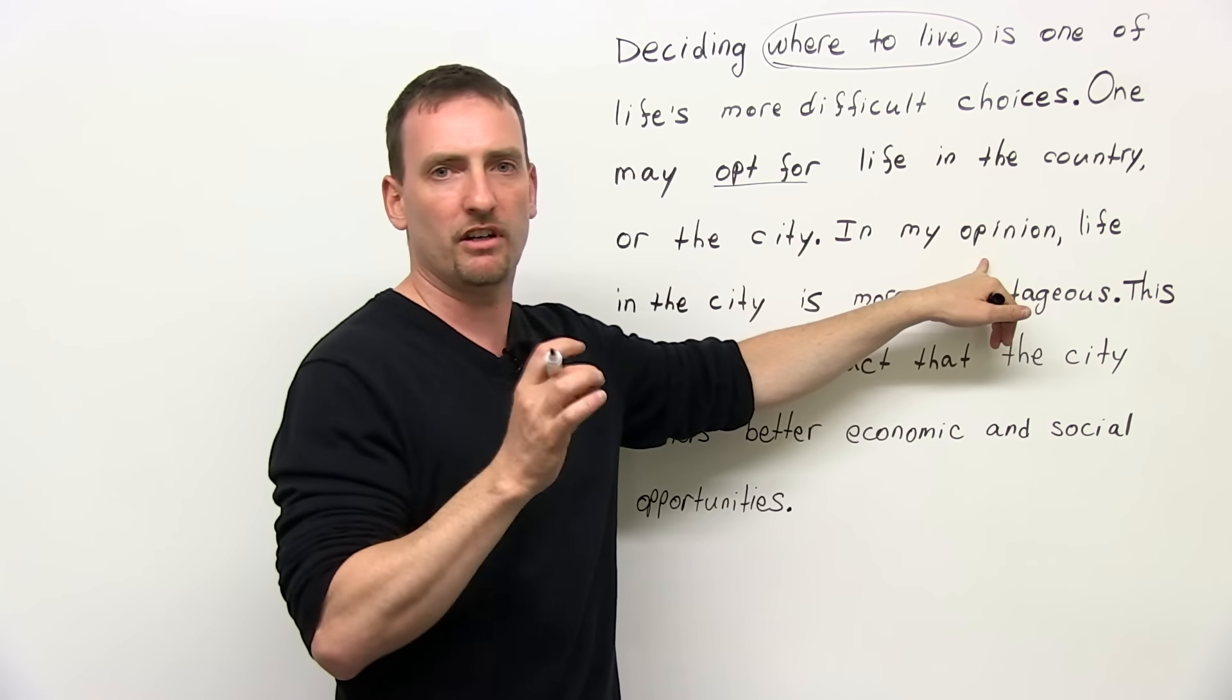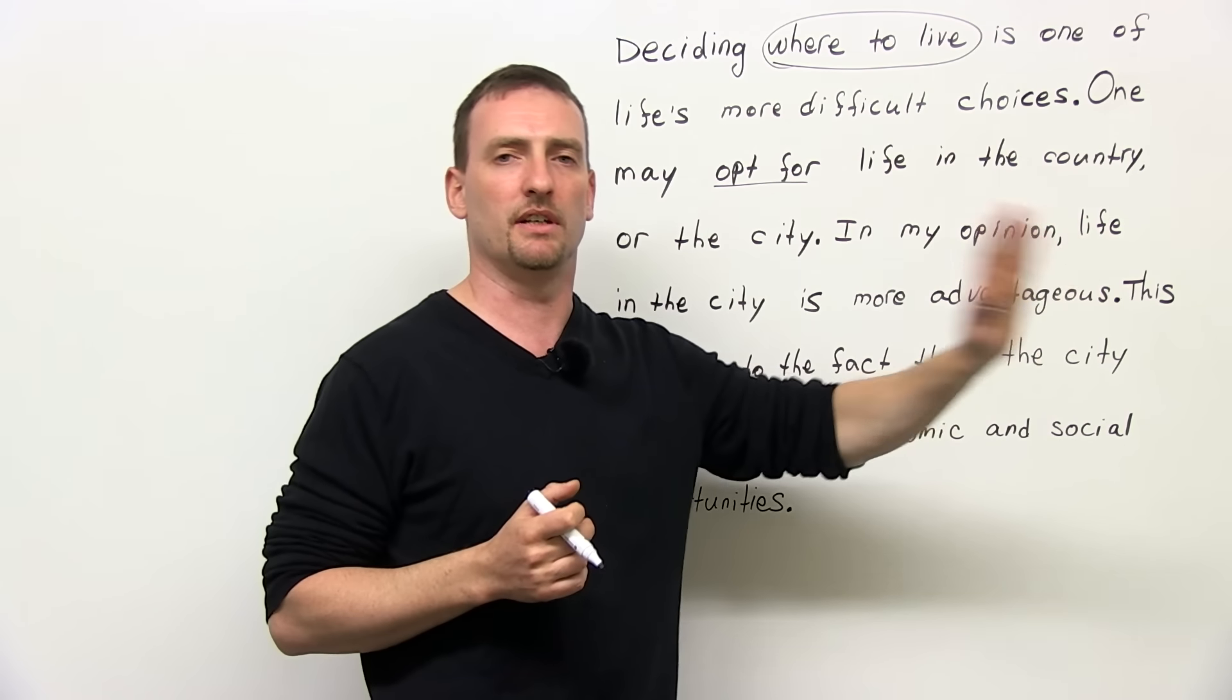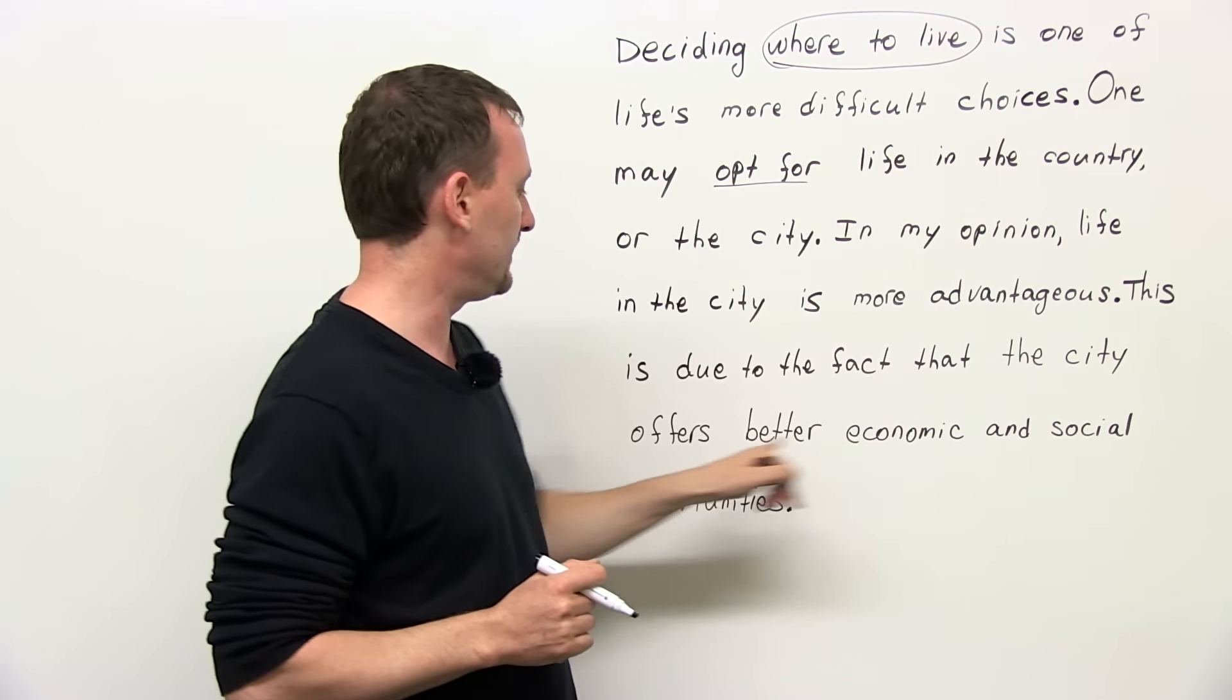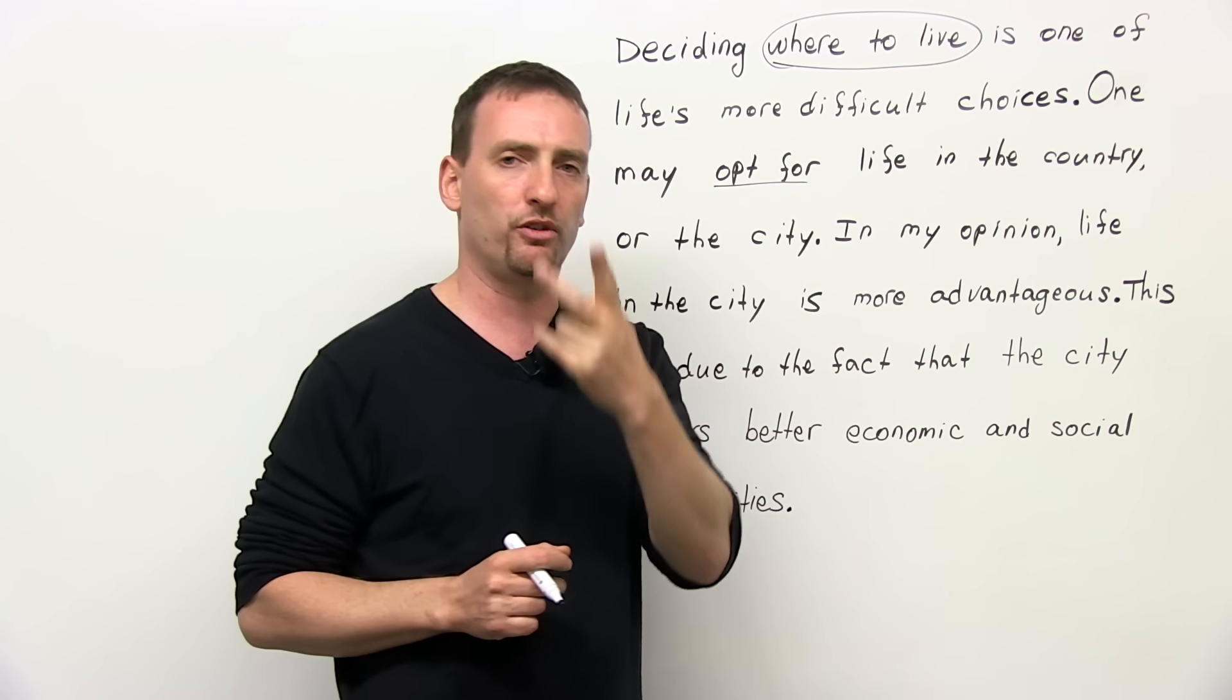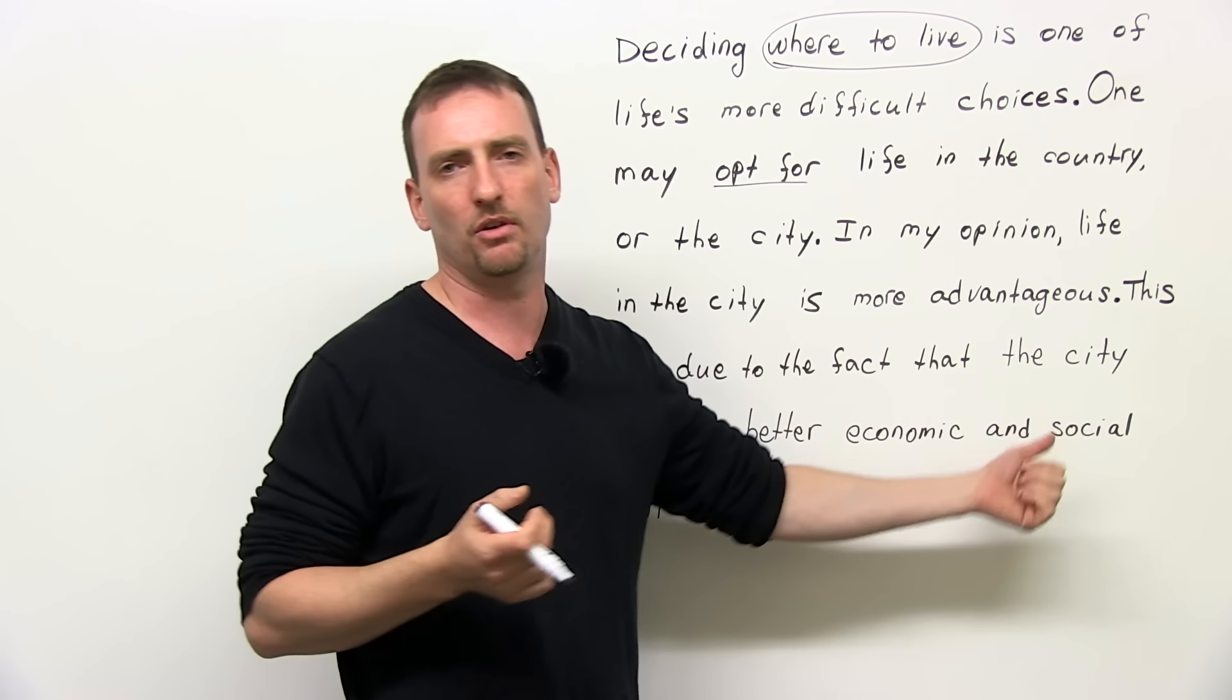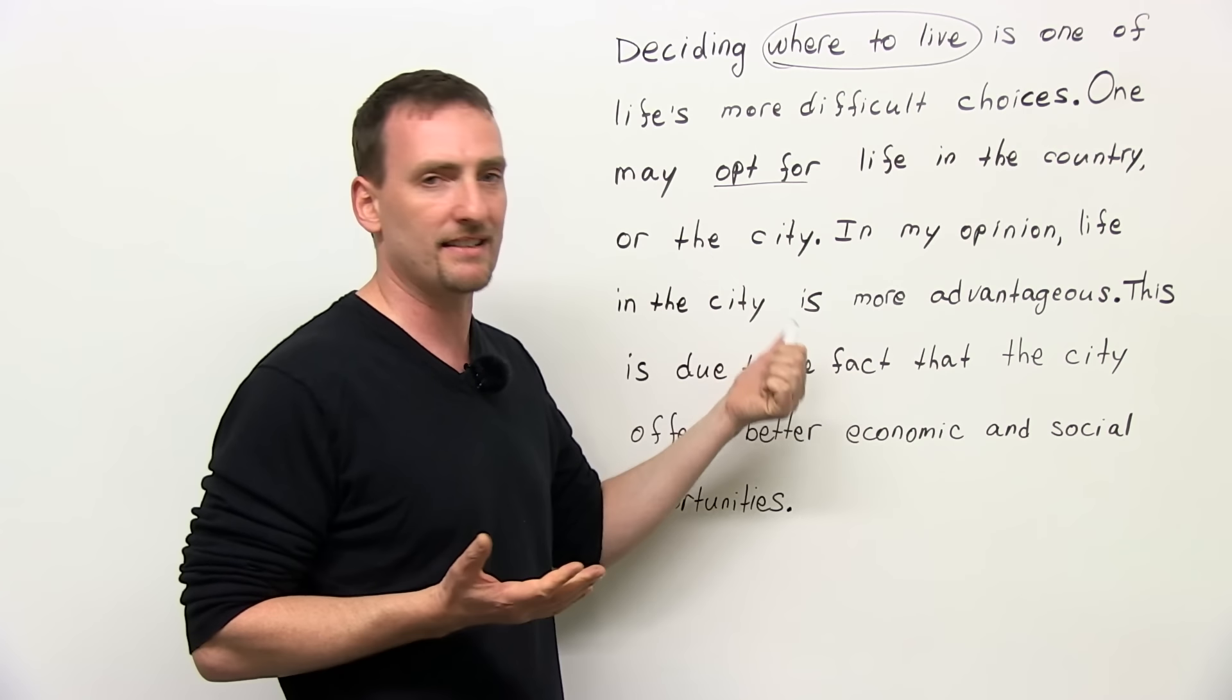One may opt for life in the country or the city. This is your question. Country. City. Very clear. In my opinion, very, very direct and to the point. State your thesis. State what you believe. In my opinion, life in the city is more advantageous. I choose city. It's better. That's all I want to say. That's the... I'm answering the question. This is my stance. This is my opinion. This is due to the fact that the city offers better economic and social opportunities. So I'm going to present the reader with two reasons. Economic and social. Am I giving any idea what the economic reasons are? No. Am I giving you any ideas what the social reasons are? No. They're very, very general. I've made it a bit more general. So I've answered all four questions. I'm doing exactly what the essay is supposed to do, what the essay is asking me to do.